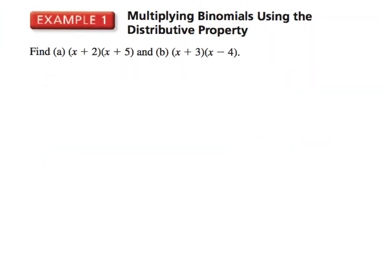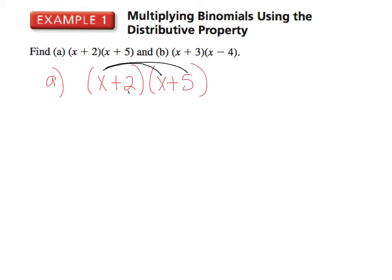Example number 1: multiply binomials using the distributive property. In part A, write this down: x plus 2 times x plus 5. You multiply everything in the first parenthesis to everything in the second. Take the x and distribute it — x times x gives x squared. Don't ever forget: x times x, you add the powers, which gives you x squared.